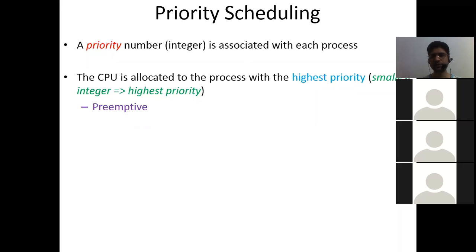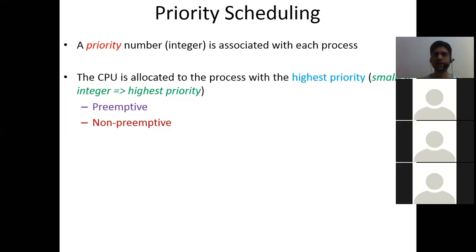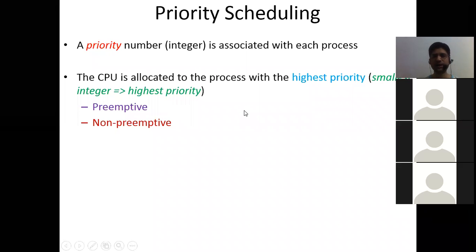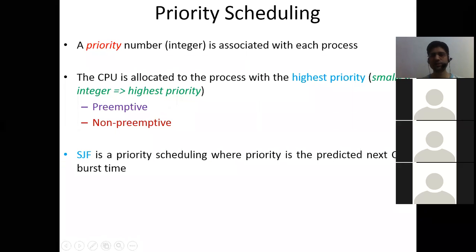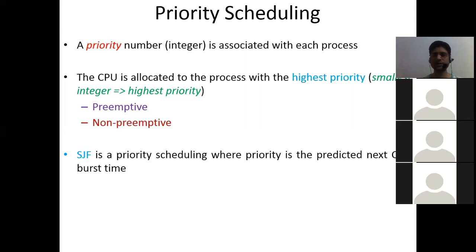Priority scheduling is also of two types: preemptive and non-preemptive. In preemptive scheduling, if a process is executing and a higher priority process arrives, the running process is preempted. In non-preemptive scheduling, once the highest priority process is chosen, it executes until it finishes and cannot be preempted. Shortest Job First is a type of priority scheduling where priority is the predicted next CPU burst time.